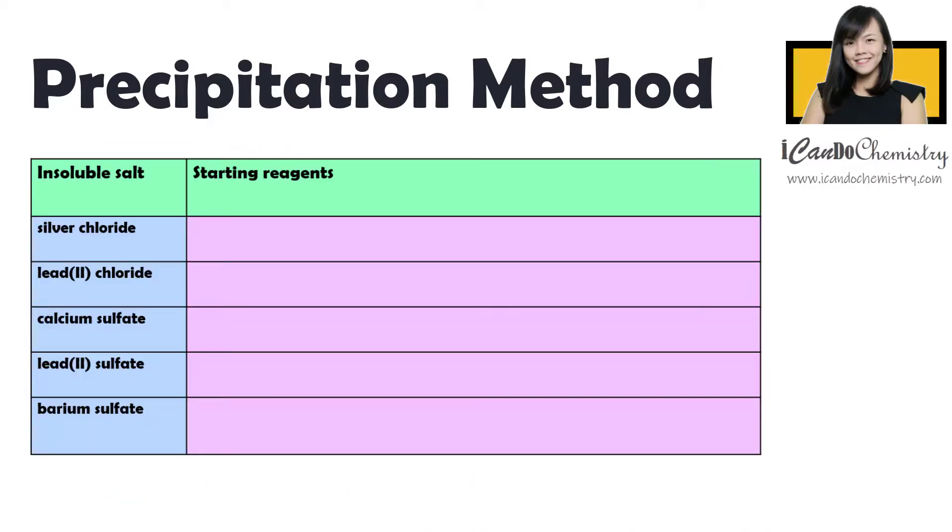Now over here in this table, I have listed down some insoluble salts. Are you able to decide what are the possible soluble salts that you can choose to make this insoluble salt? You may want to think about it, and I have posted the answers on my website. The link is in the description.